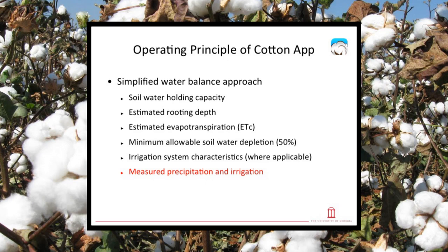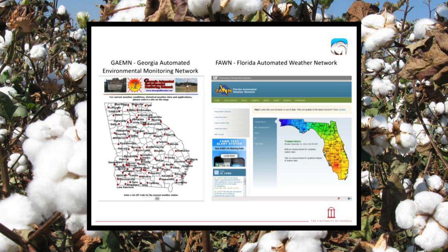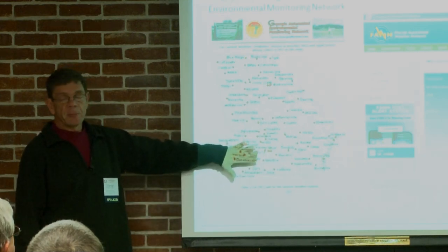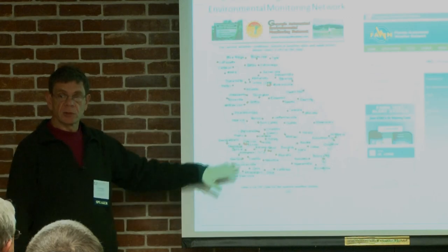This is the operating principle of the app in general — we're doing a water balance method. You can imagine a reservoir: we start the growing season with a certain amount of water in the soil, the plant is pulling water out, and we're adding water with rain and irrigation. The ETc — crop coefficient times evapotranspiration — estimates how much the plant is pulling out daily. Measured precipitation and irrigation are key factors because if those numbers are wrong the water balance doesn't work. The app automatically pulls data from weather stations, but remember those stations may be 20–30 miles from your field. In summer with convective rainstorms, the weather station might report very different rainfall than what you got, so it's important to ground truth what's happening in the field.